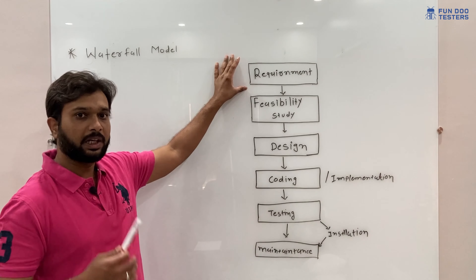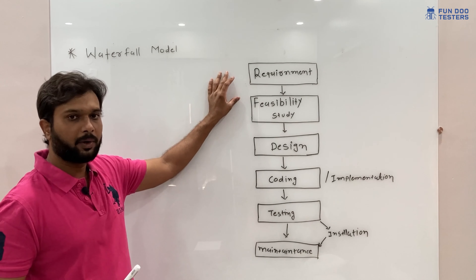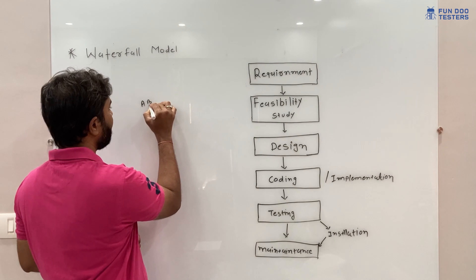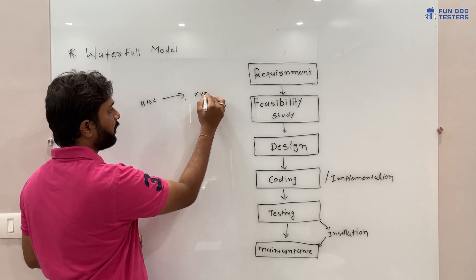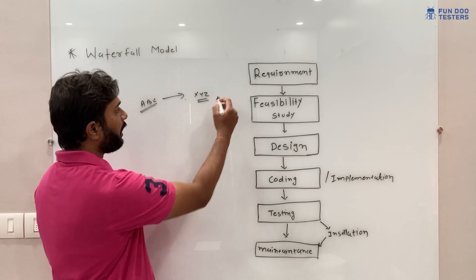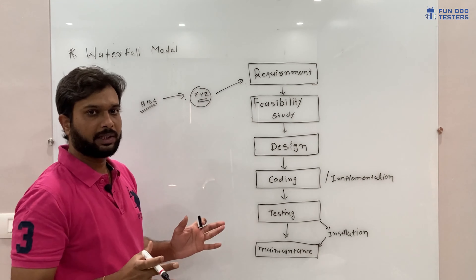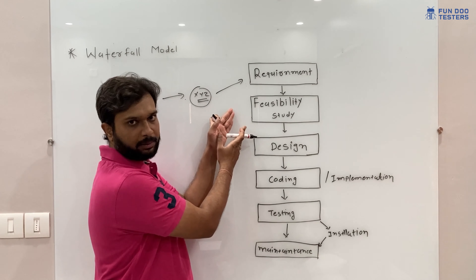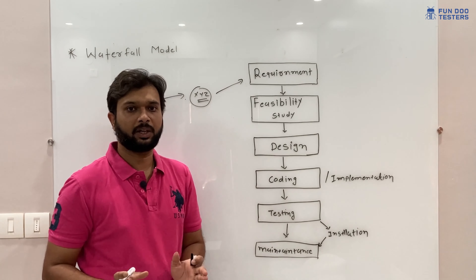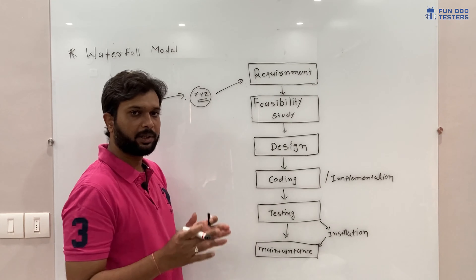The initial stage is requirement gathering. In the waterfall model, when a client is clear about the requirements, they come to a company — for example, ABC is the client and they go to XYZ company. The client explains the requirements, and once the requirements are ready it moves to the feasibility stage. At this point the requirements are frozen — there is no further change.